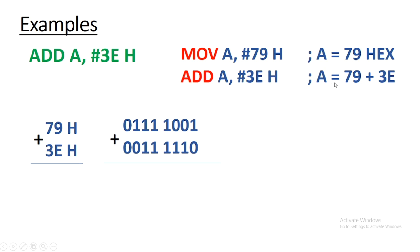And then we are adding 3EH into accumulator. After the operation, the result will be stored in accumulator itself. After addition, B7H would be the result which is stored in accumulator.